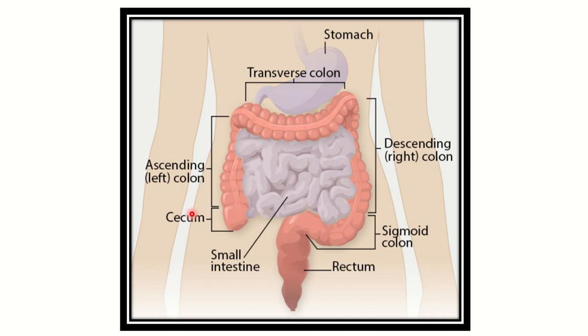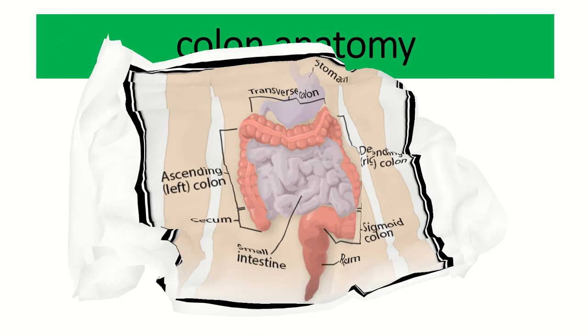In summary, the parts of the colon are: cecum, then the ascending colon, then the transversely placed transverse colon, then the descending colon, sigmoid colon, rectum, and anus.